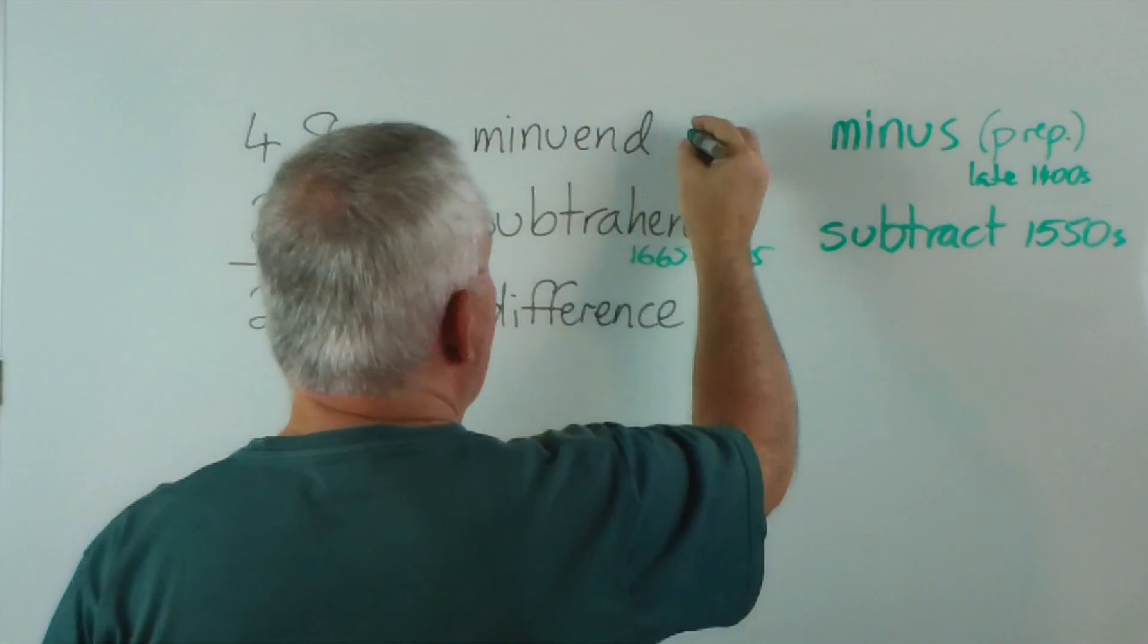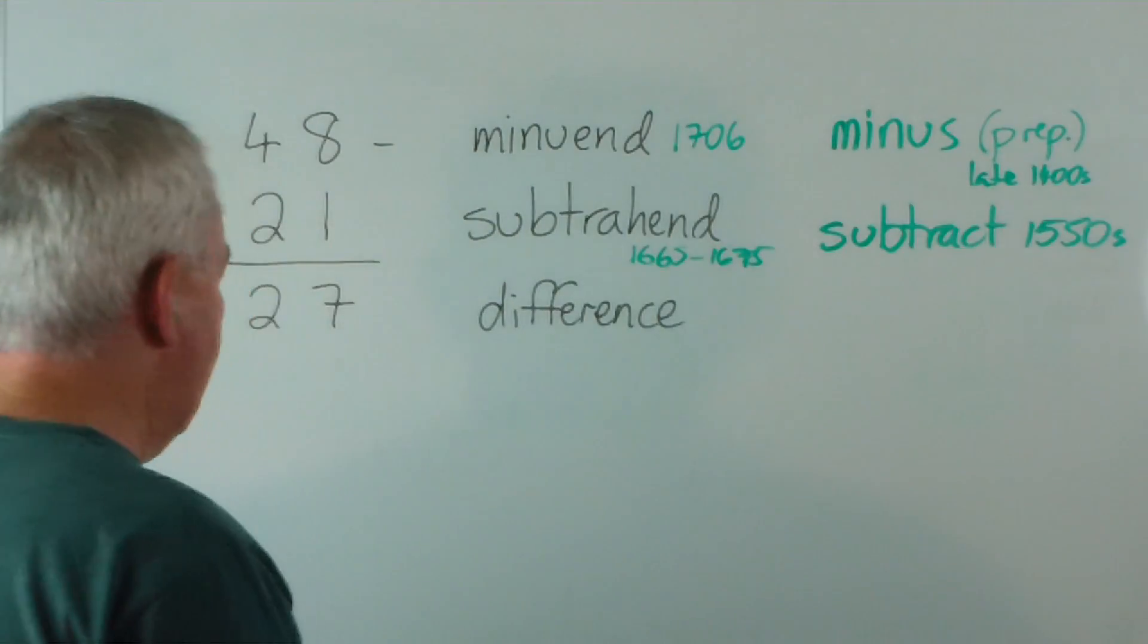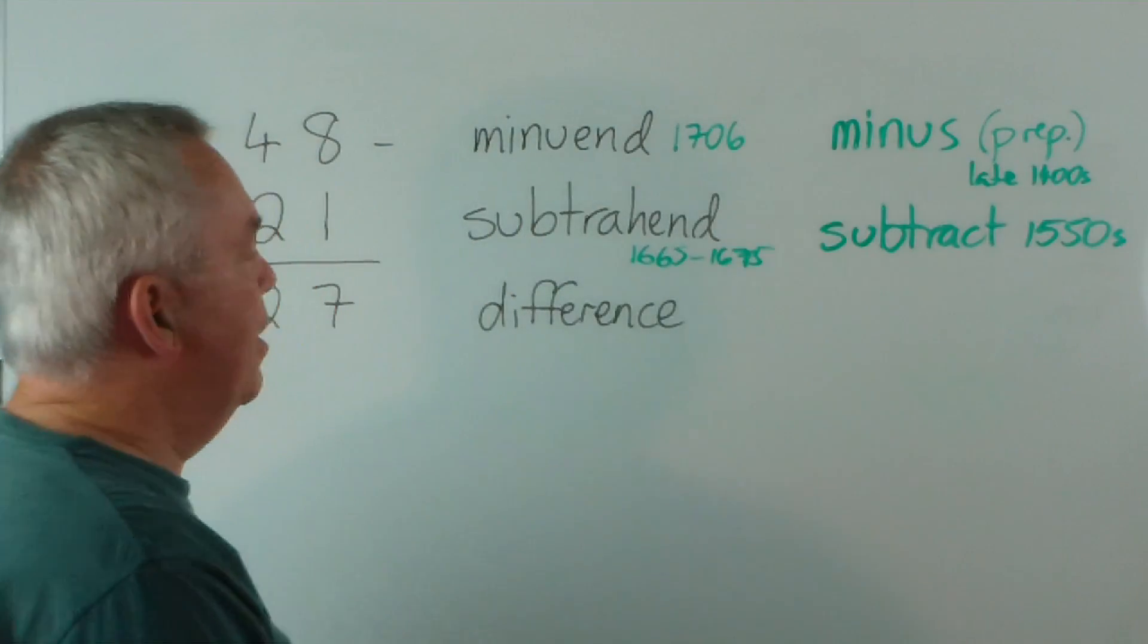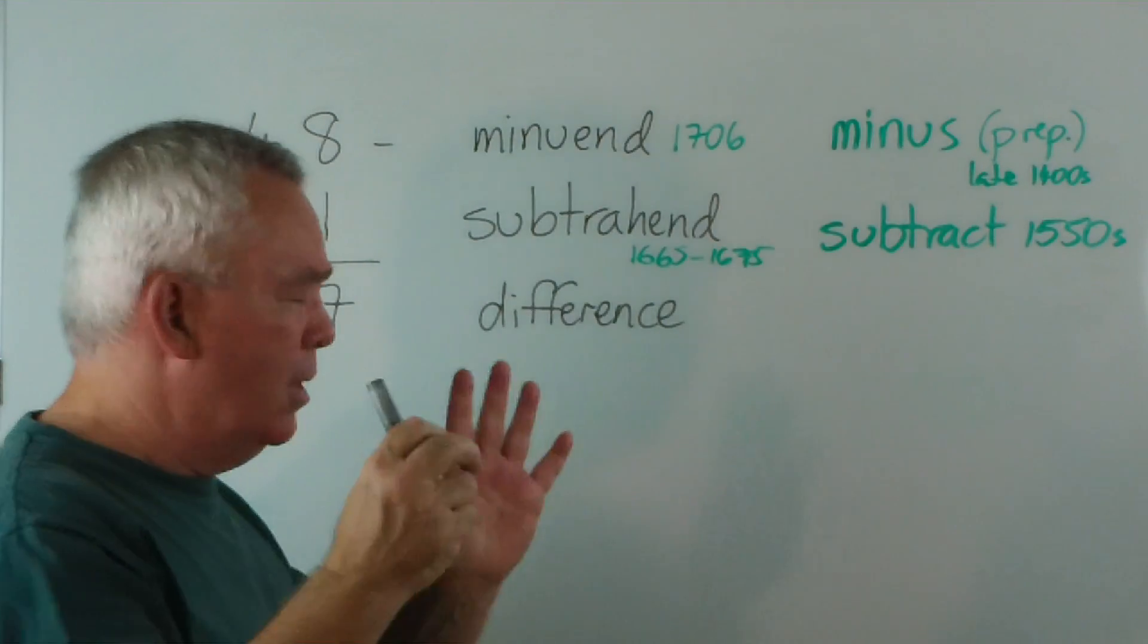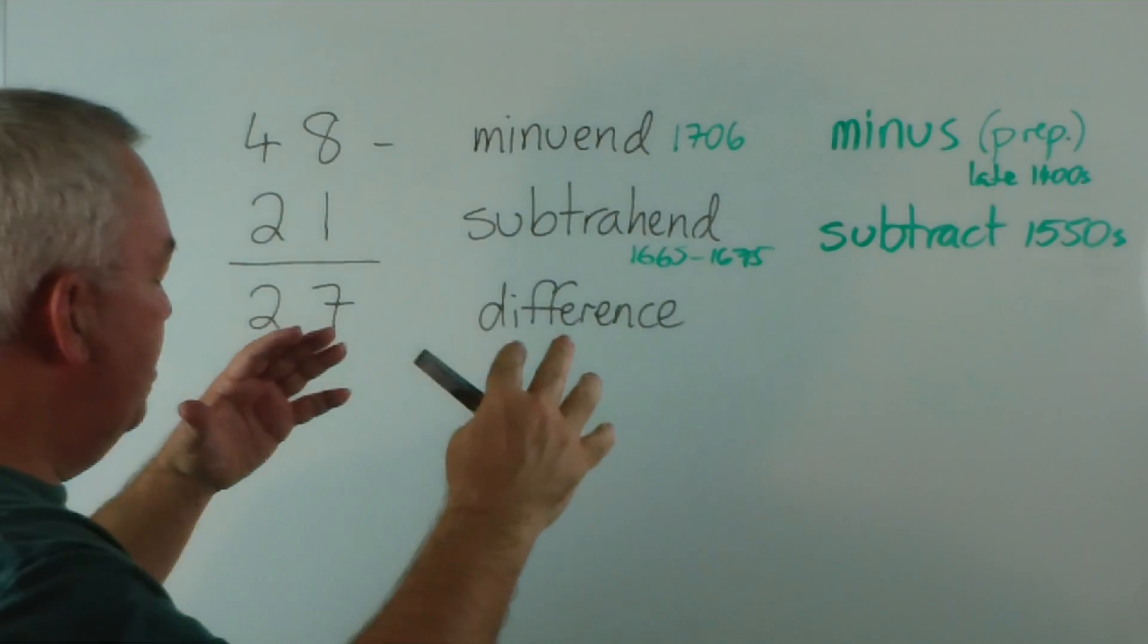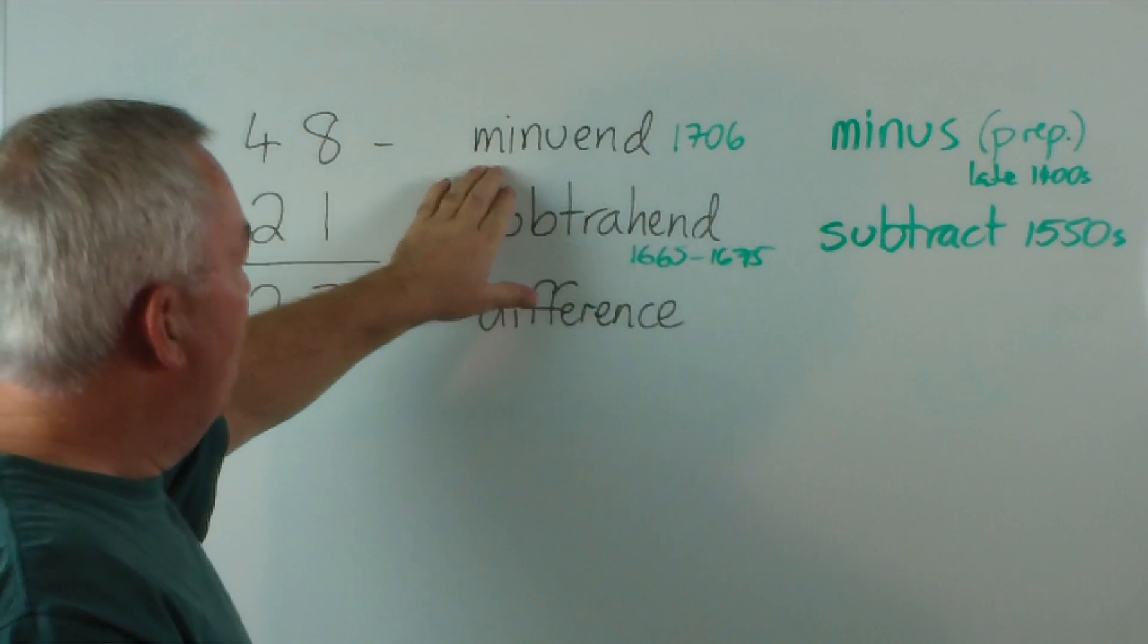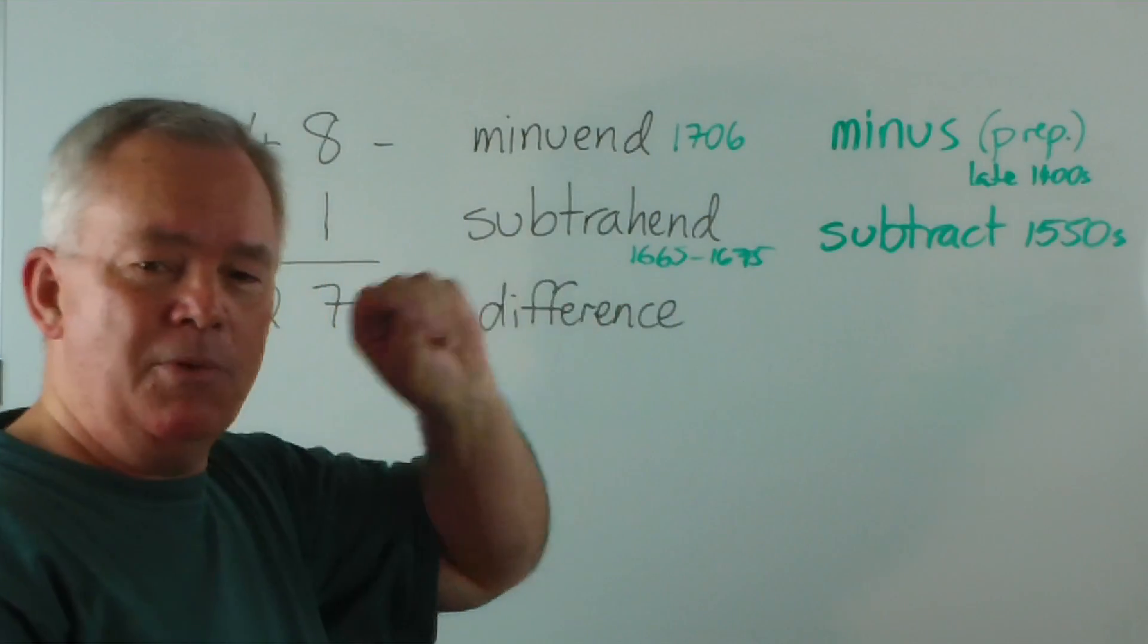The next number is this one. Now, this was first used, to the best of our knowledge, in 1706. And it comes from the same Latin origin as minus. I think... look, my Latin's not good, but minuere, or some word like that. And it means to diminish or reduce. So this is the number that was going to be reduced or diminished.